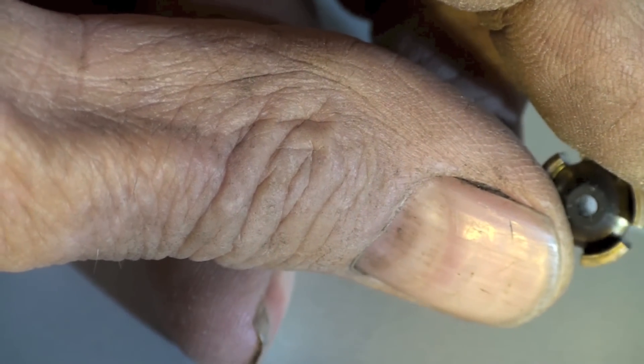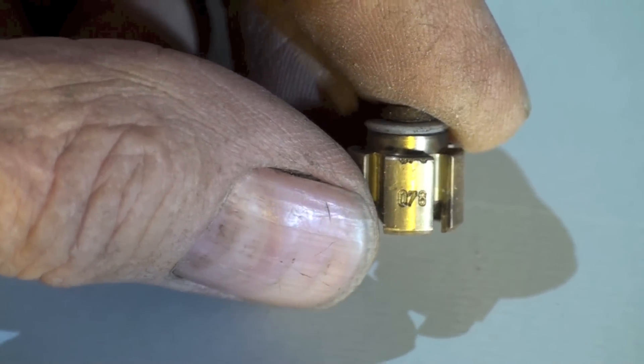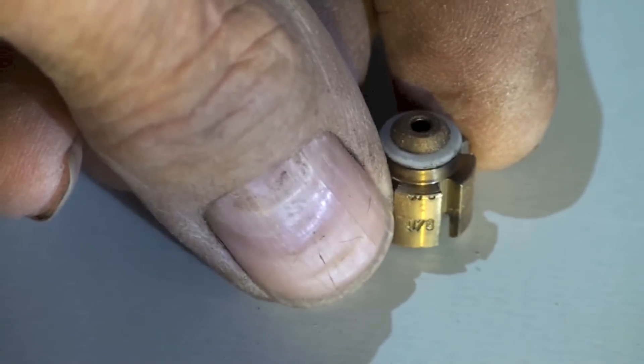They're specific sizes and there's numbers. See, looks like that's like an 078.